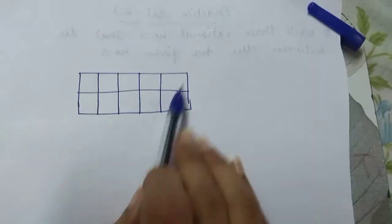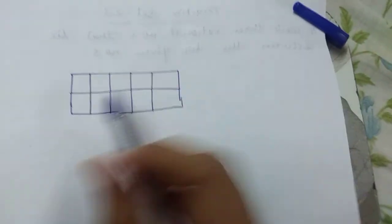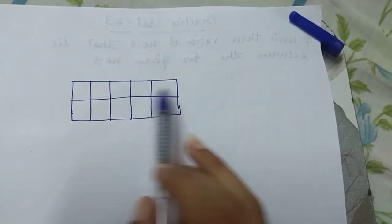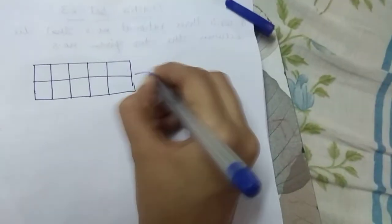Now see, this is a wall. And this wall is divided into how many parts? 1, 2, 3, 4, 5, 6, 7, 8, 9, 10. 10 parts.